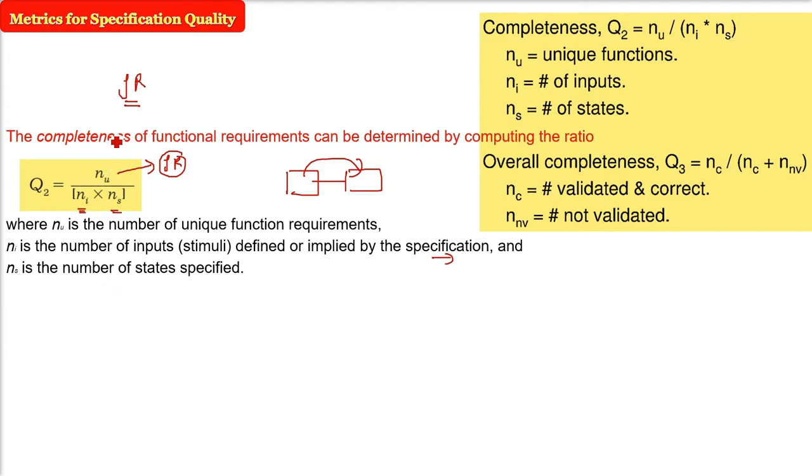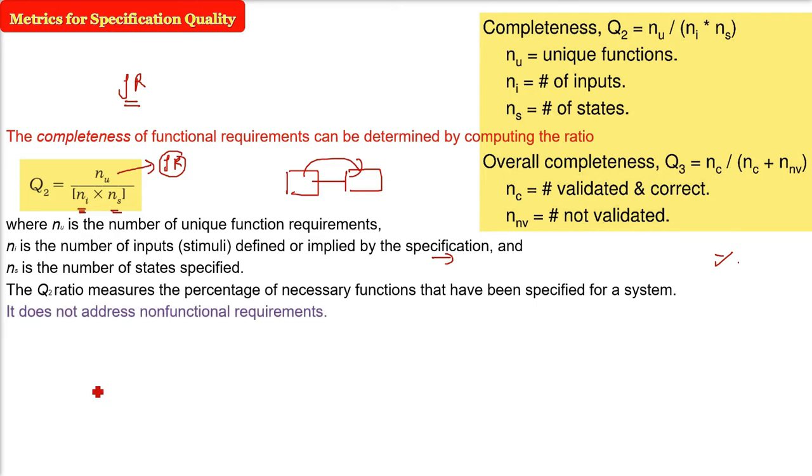Okay, this is the completeness. So, you get a metric for completeness of functional requirement of this specification. Now, Q2 will measure the percentage of necessary functions that have been specified for a system. So, this value will tell you, these are the functions which need to be defined or they are specified in the function. These are the necessary functions.